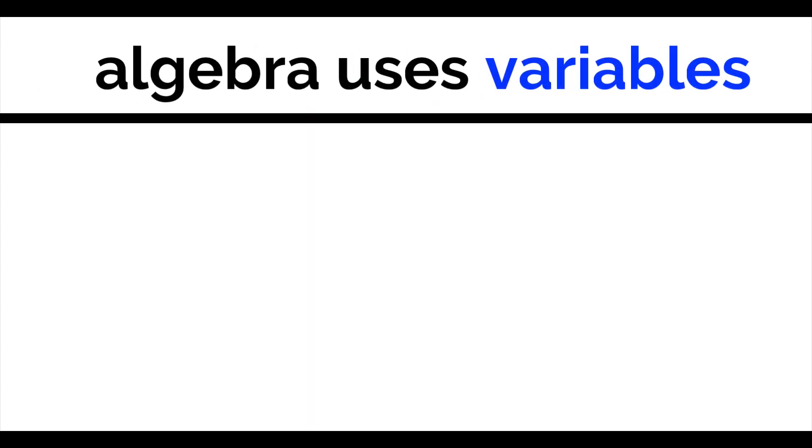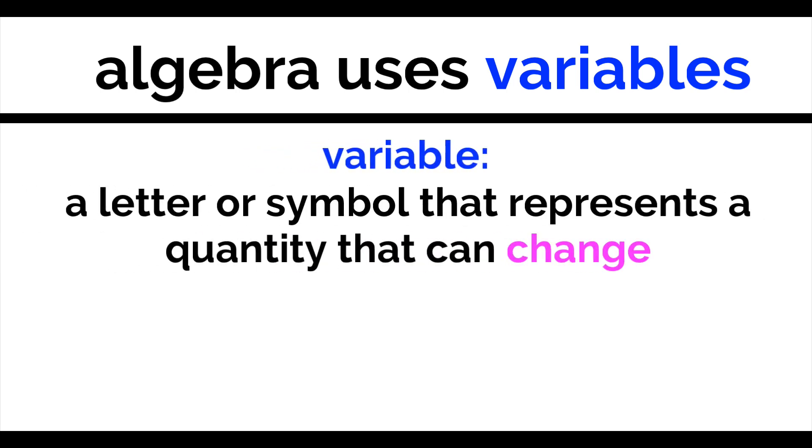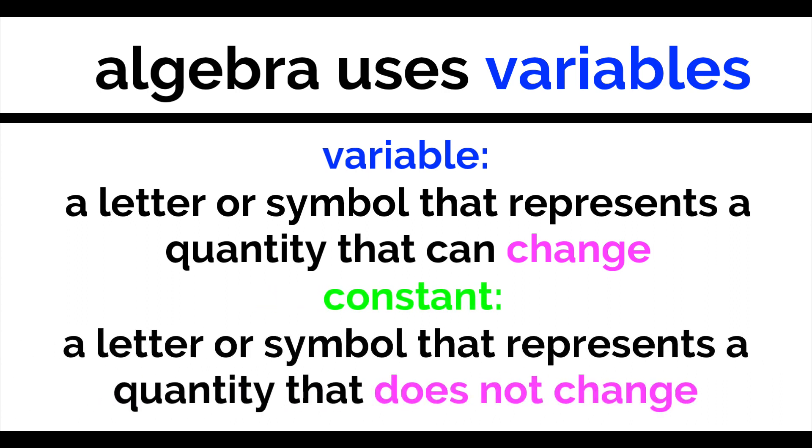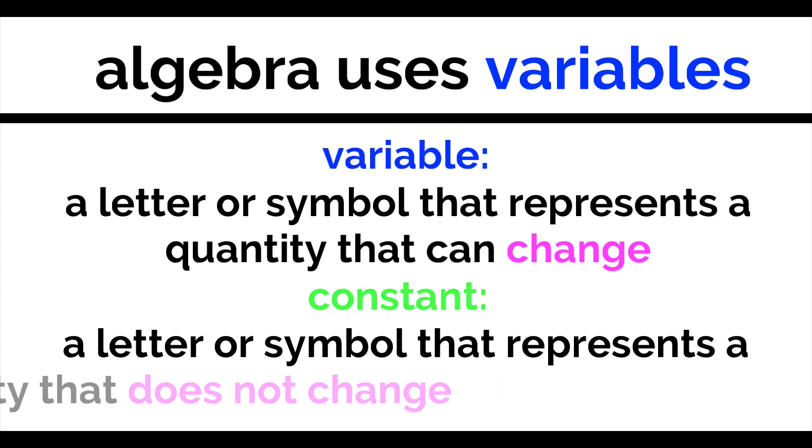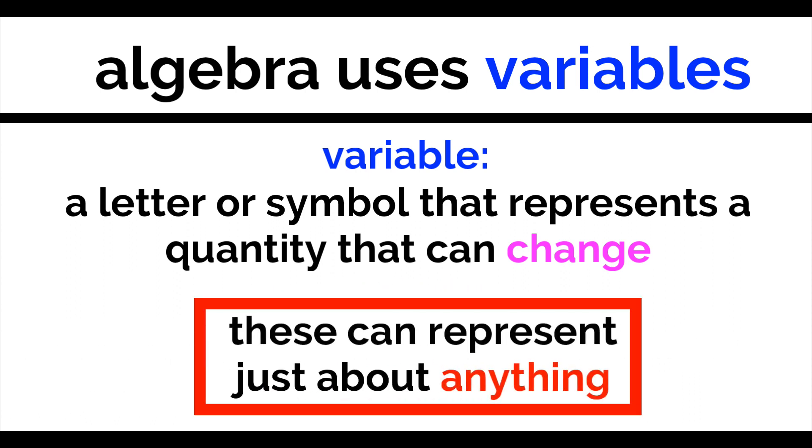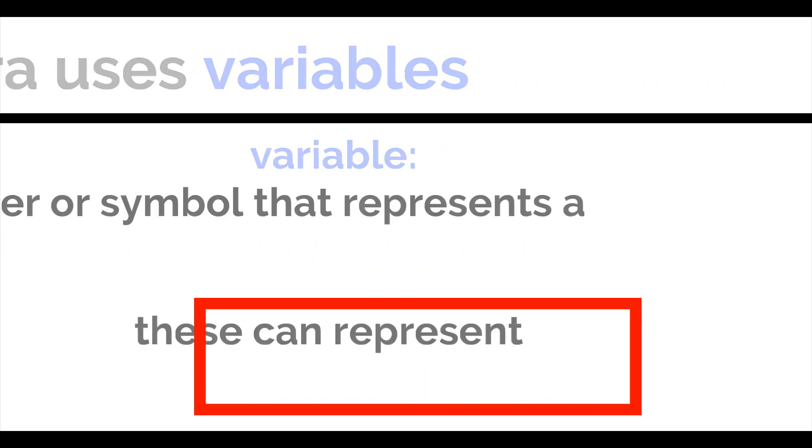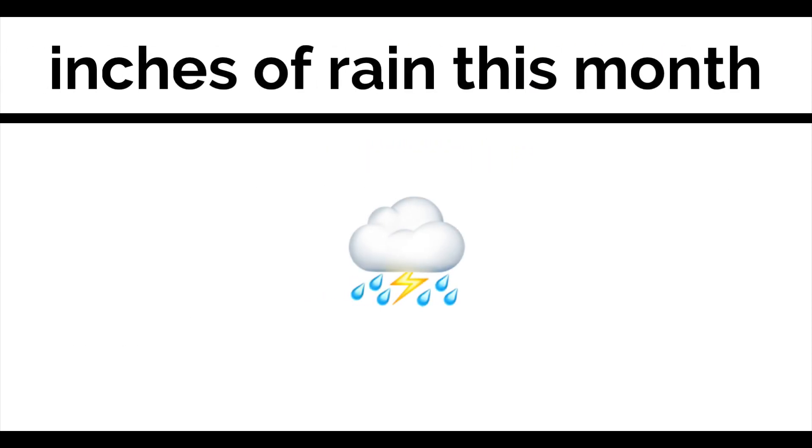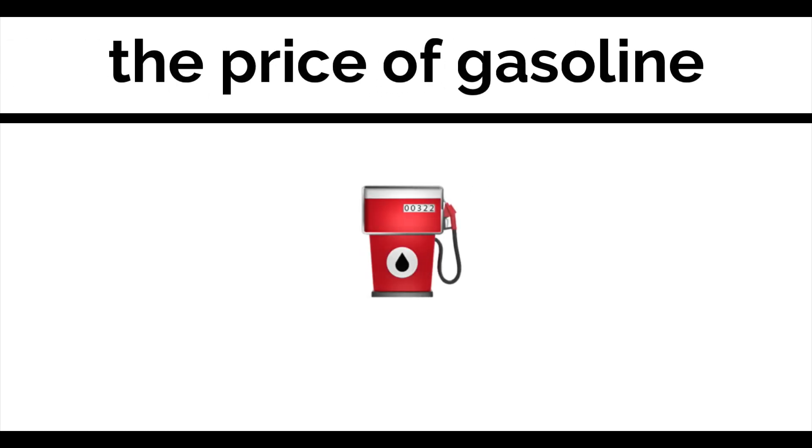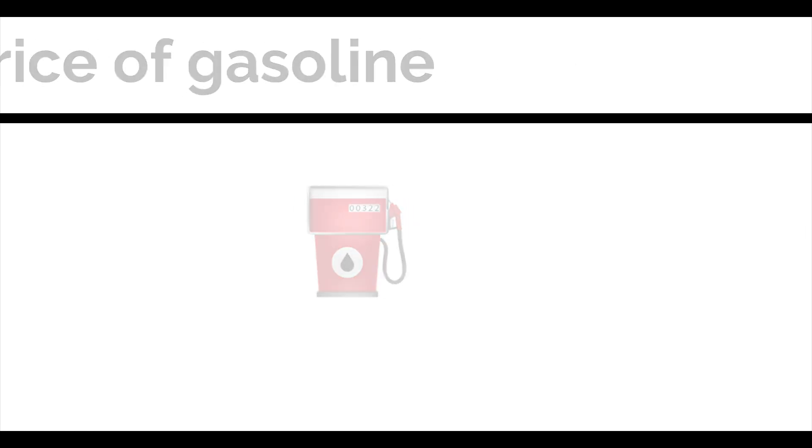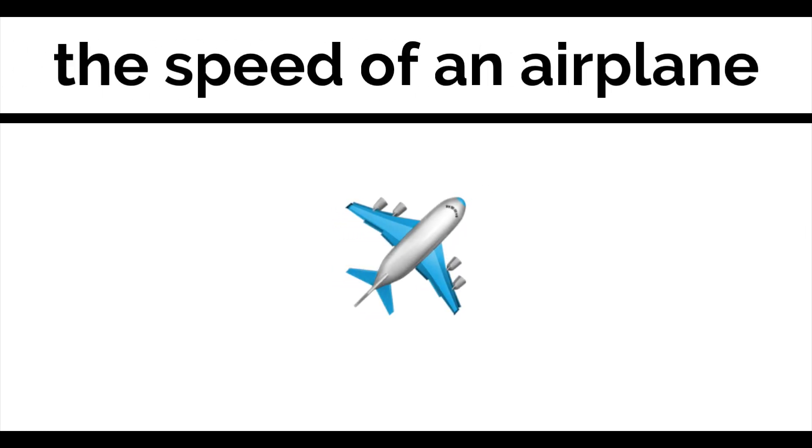First of all, what is a variable? In math, a variable is a letter or a symbol that represents a quantity that can change. This is different from a constant, which is a letter or symbol that represents a quantity that does not change. A variable can be just about anything. The inches of rain in your town in a particular month, the price of gasoline, the speed of a plane, whatever it is that you want to do math with.